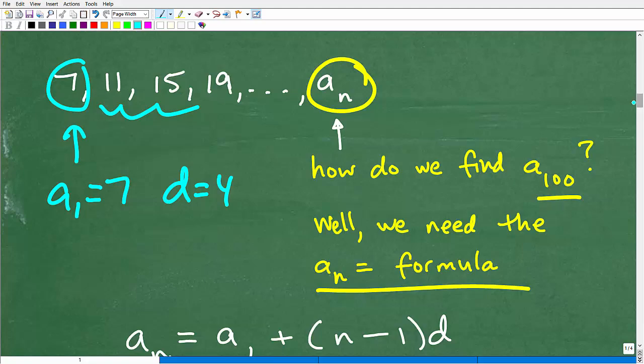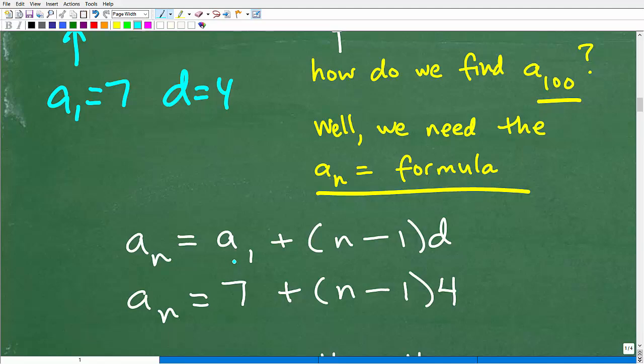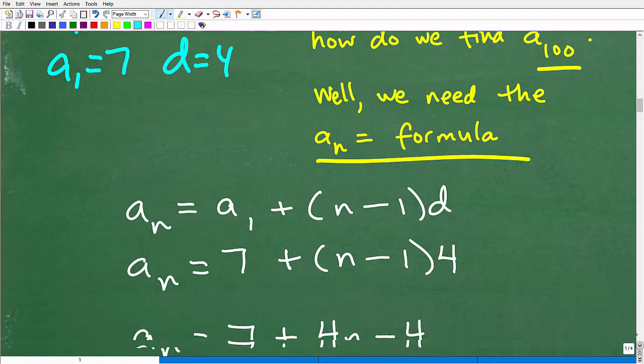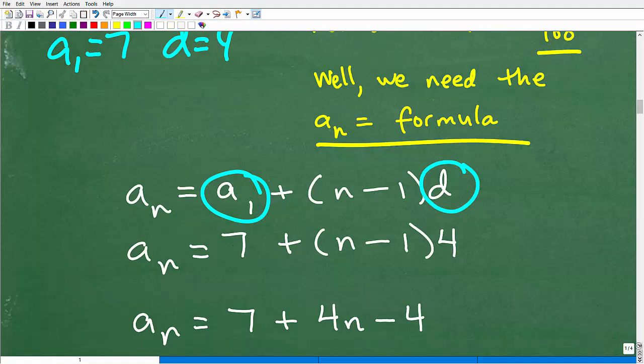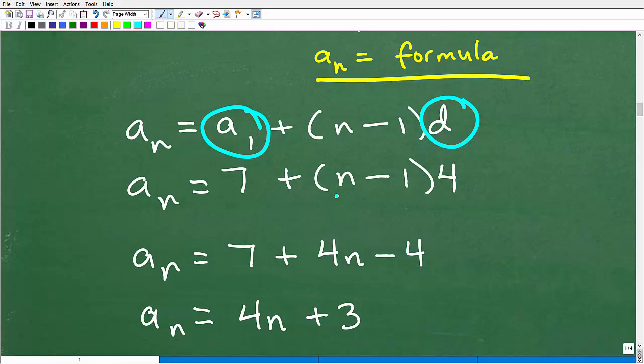So let's go ahead and plug in this information into the formula. So a sub n is equal to a sub 1 plus n minus 1 times d. Okay, so the things that we're going to plug in is d and a sub 1. All right, the n is going to stay as part of our formula. All right, so a sub 1 is 7. So we're going to have 7 plus parenthesis n minus 1.